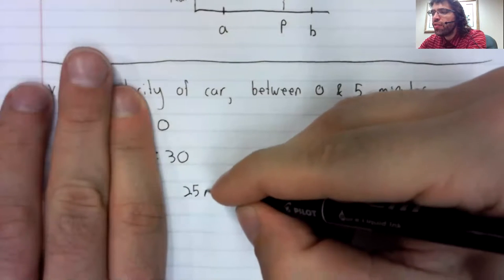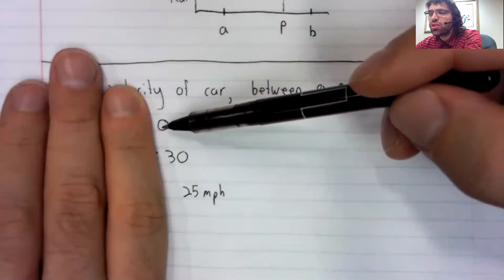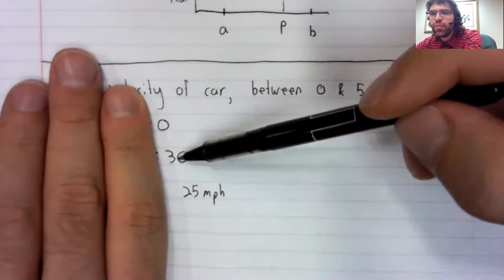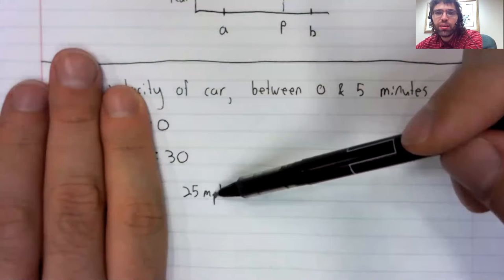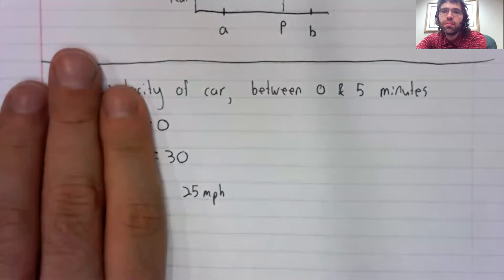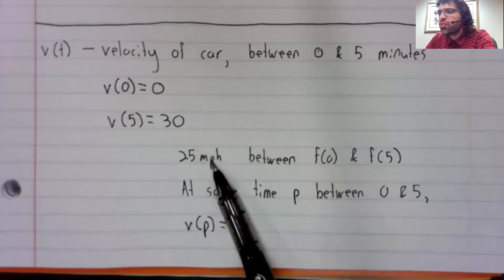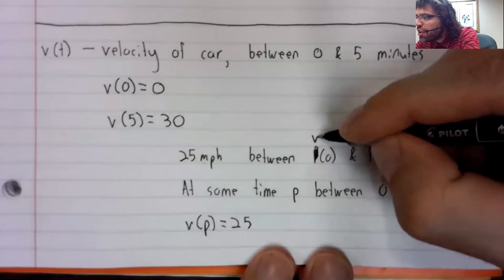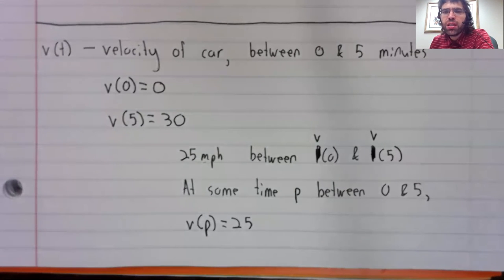What the intermediate value theorem says is that if the car accelerates from zero to 30, at some point it had to be going 25. It couldn't skip this intermediate speed. 25 is between v of zero and v of five. So at some time p between zero and five, v of p equals 25.